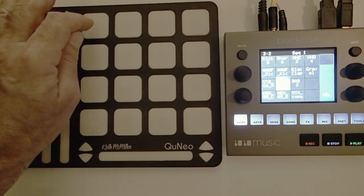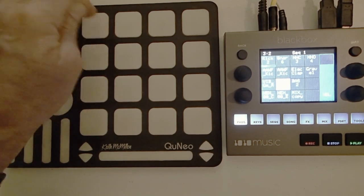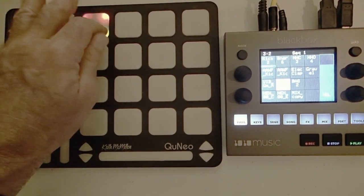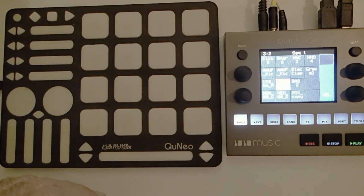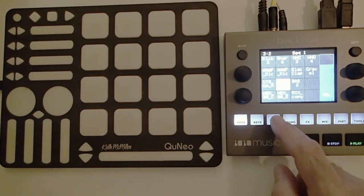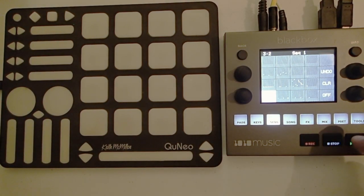Velocity control is nice. And you can swap back and forth between that and another bank which might fire off sequences. Start a little sequence here.